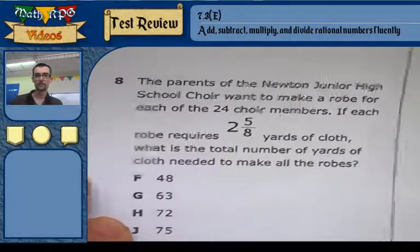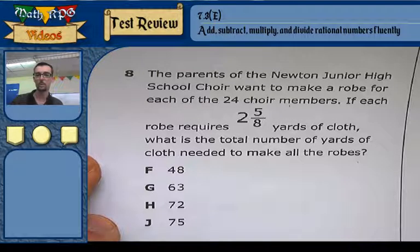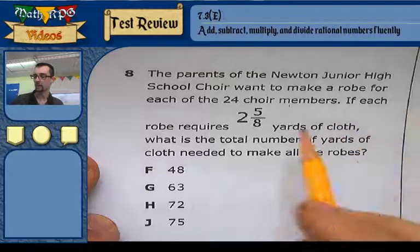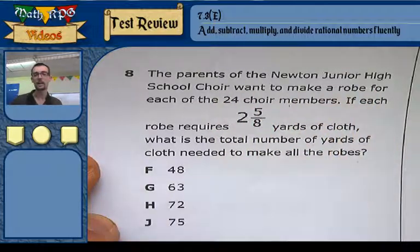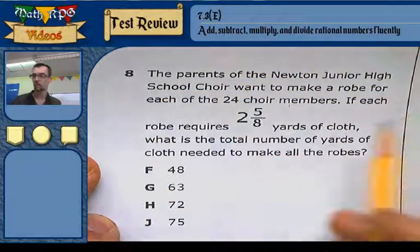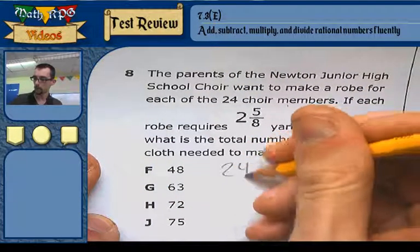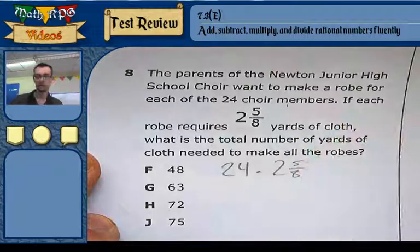Number 8. The parents of the Newton Junior High School choir want to make a robe for each of the 24 choir members. If each robe requires 2 and 5 eighths yards of cloth, what is the total number of yards of cloth needed to make all the robes? Okay, so again I've got, we're making clothes for 24 people. Each person needs it, so I'm going to be adding that cloth over and over and over again, which is the same as multiplication. So I'm going to be multiplying the 24 people times the 2 and 5 eighths.